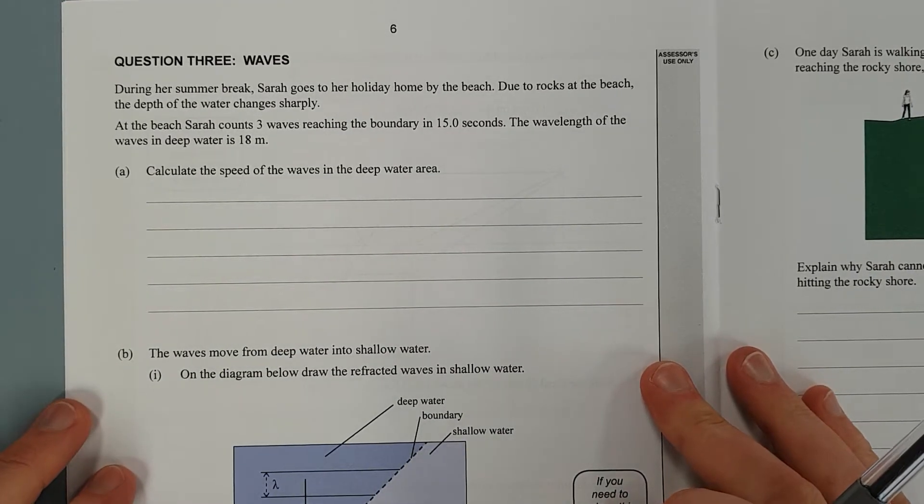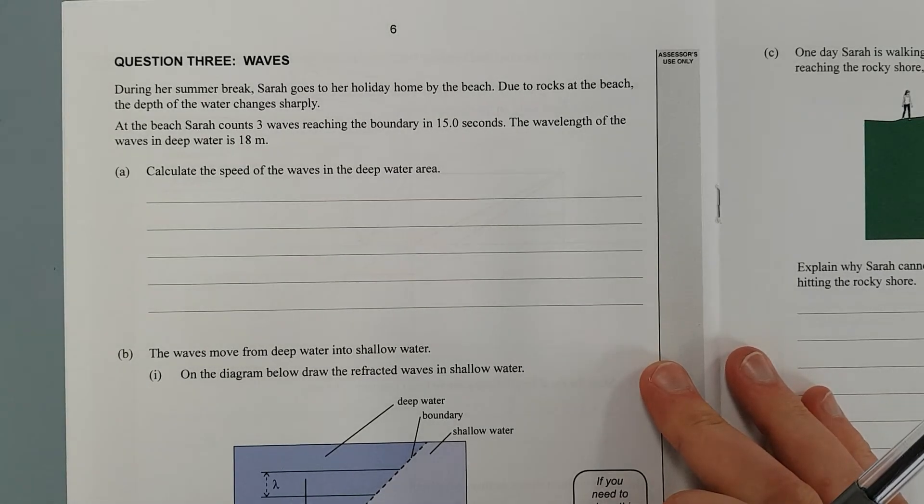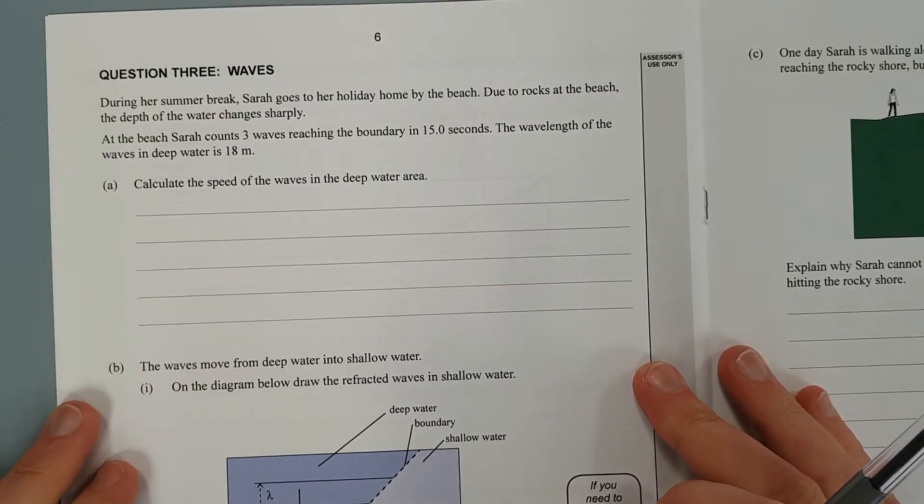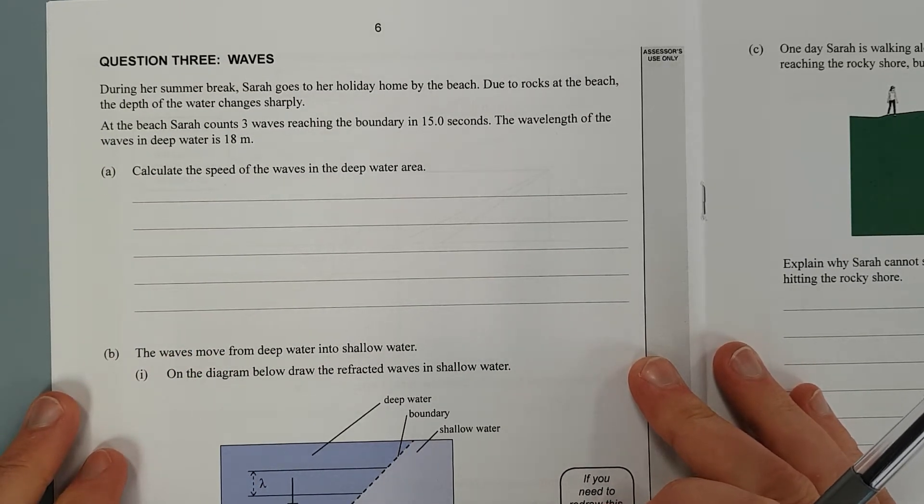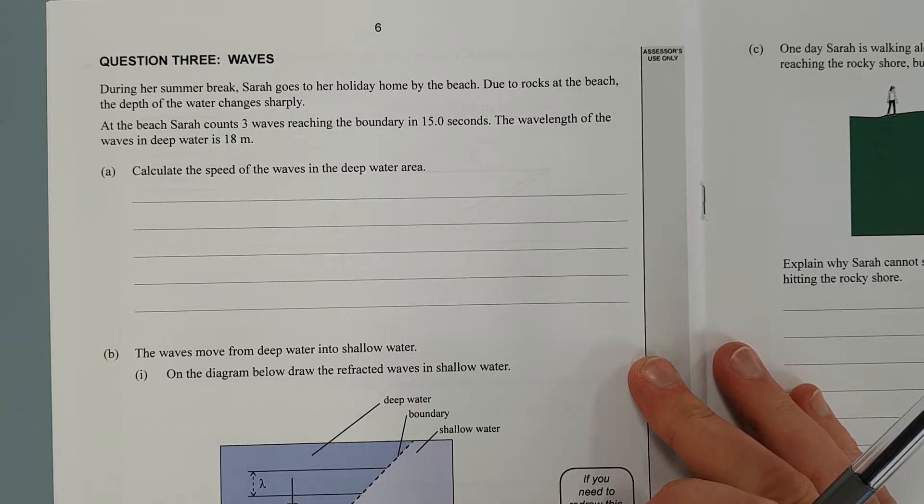During her summer break, Sarah goes to her holiday home by the beach. Due to the rocks at the beach, the depth of the water changes sharply. At the beach, Sarah counts three waves reaching the boundary in 15 seconds. The wavelength of the water is 18 metres.